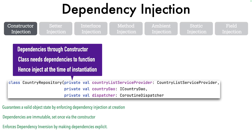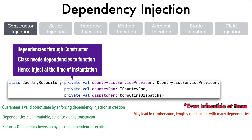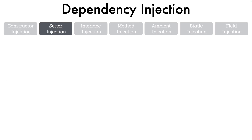However, there are certain disadvantages with constructor injection. The first one is it may lead to cumbersome, lengthy constructors with many dependencies. If this class needs five or six dependencies, the constructor parameter list looks very large, and passing all those things at instantiation may not even be necessary. Also, dependencies are fixed post-creation — once passed at object creation, you can't change them, and they remain fixed throughout the lifecycle of that object.